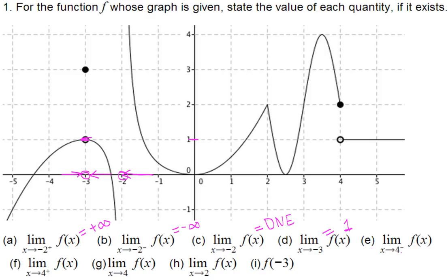Part e: what is the limit of the function when x approaches 4 from the left? Here is 4. When x is very close to 4 from the left side, the value is very close to this level, which is 2. So this limit is 2.